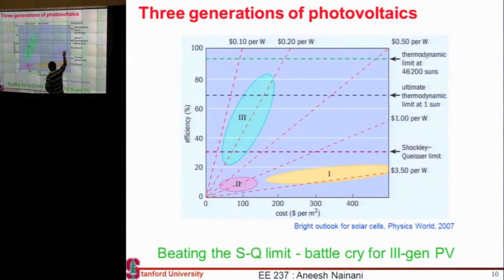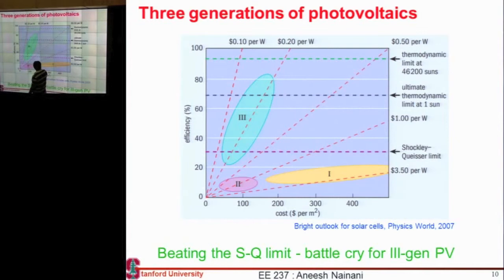Again, you bring it down to this dollar-per-watt slope. And what is being popularized as third generation PV is to go to really high efficiencies — probably not as cheap as second generation, maybe as expensive as crystalline silicon — but achieving really high efficiency. Efficiency has truly become the name of the game for third generation PV.